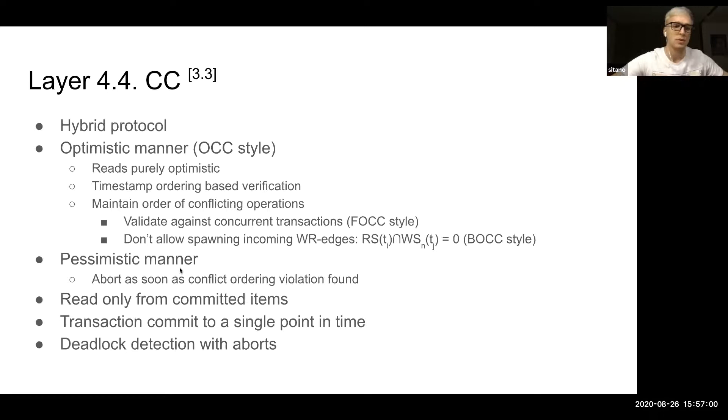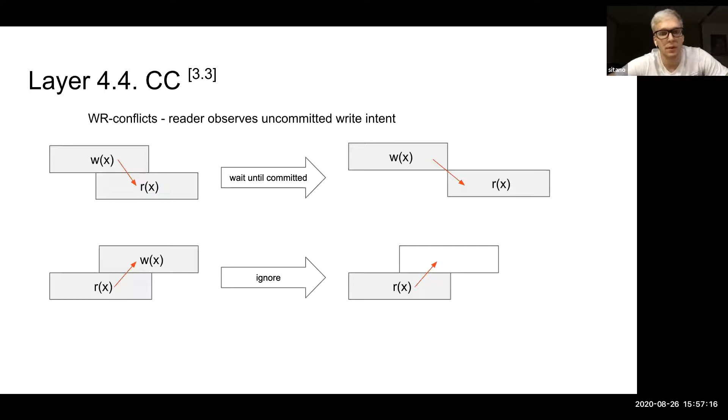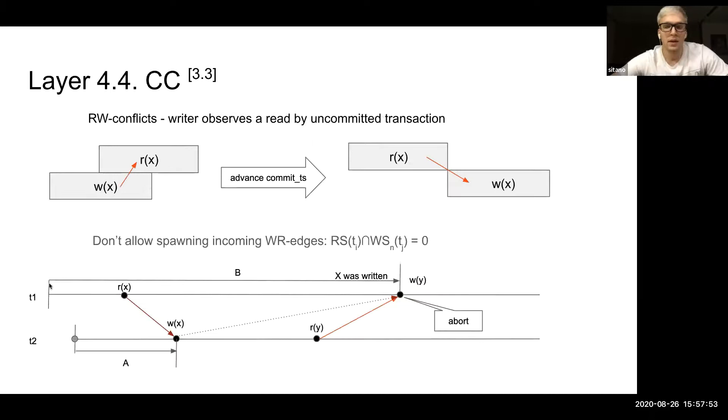In summary, it allows only reading committed items. All transactions are points in time. For the write-read conflicts, it's pretty simple. When the reader meets a write, depending on its timestamp, it will either wait for it to be committed if the write has a lower timestamp than read itself. This is the case on top. And the case on the bottom, if the write has a higher timestamp than read itself, it will just ignore it, which makes sense, because at the point in time when we are reading, the write doesn't exist.